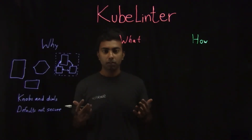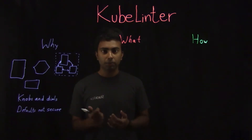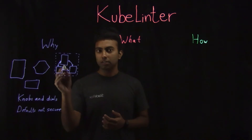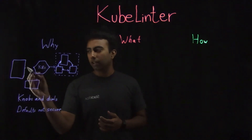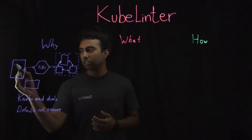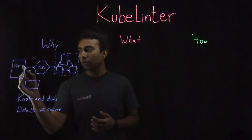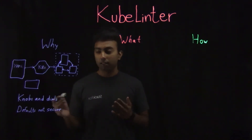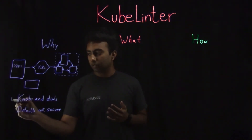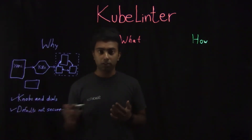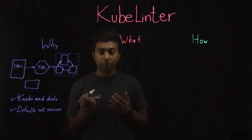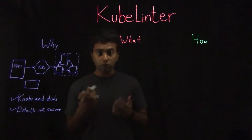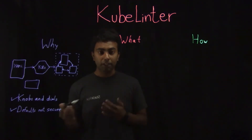So why did we build KubeLinter? Well, it was actually born out of a problem that we experienced firsthand at StackRox. We deploy our applications into clusters managed by our orchestrator of choice, which is Kubernetes. And as is the case with Kubernetes, we configure these applications in YAML files. What we found is that configuring these YAML files is hard. There's a lot of knobs and dials that you have access to, and the defaults are not geared towards security. So it's both hard for me as an individual developer to make sure that I'm configuring YAML files correctly, and it's also hard for us as an organization to make sure that the applications being deployed into our clusters are following security best practices.